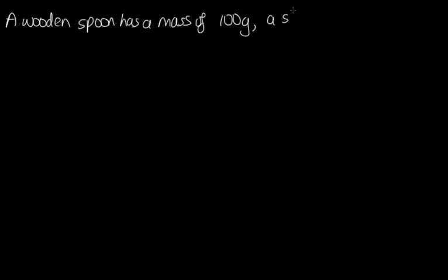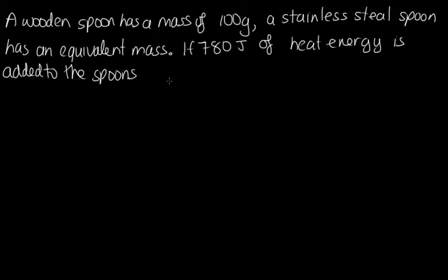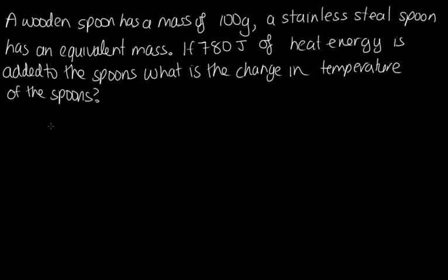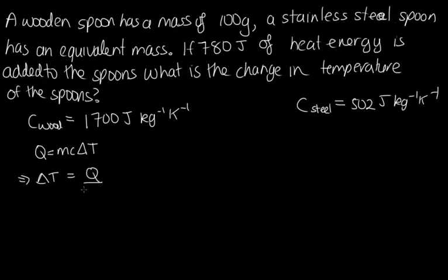A wooden spoon has a mass of 100 grams. A stainless steel spoon has an equivalent mass. If 780 joules of heat energy is added to the spoons, what is the change in temperature of the spoons? We're told that the specific heat of wood is 1,700 joules per kilogram per Kelvin, and the specific heat of steel is 502 joules per kilogram per Kelvin. The equation we're going to use is q = mcΔT, and what we're trying to find is the change in temperature. Rearranging it: the change in temperature is equal to q over mc.